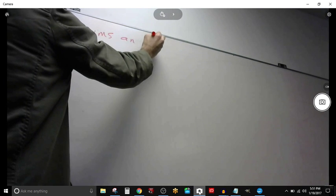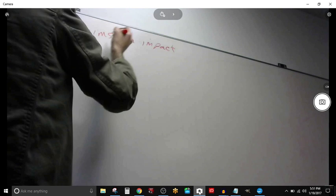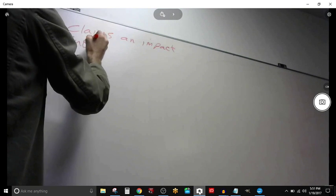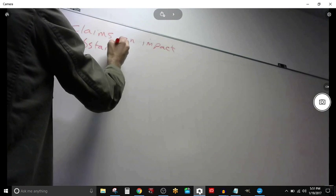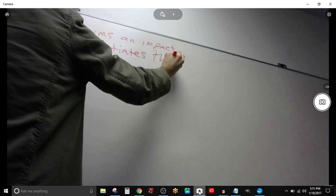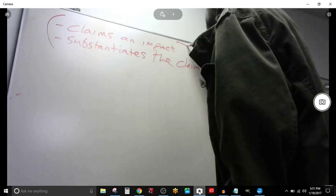Types of arguments. An argument is comprised of three things: the claim, claims an impact, and substantiates the claim. This is a contention level argument.